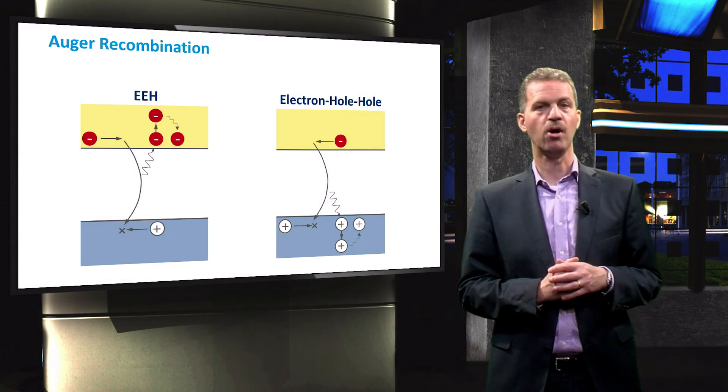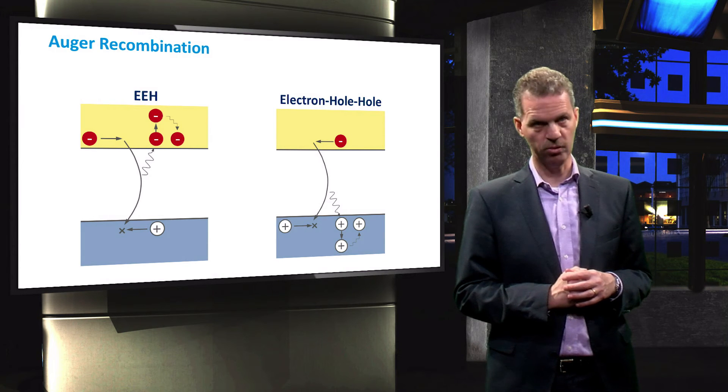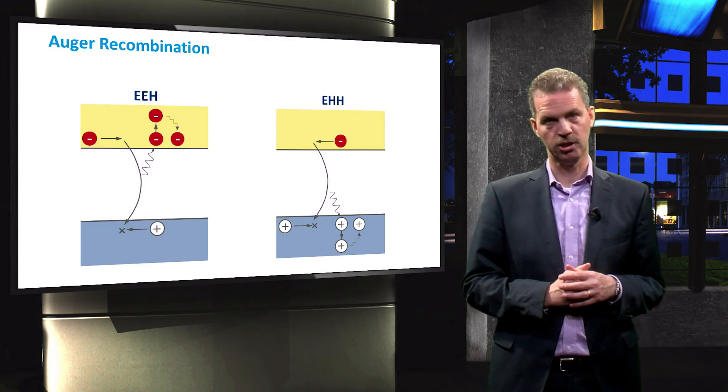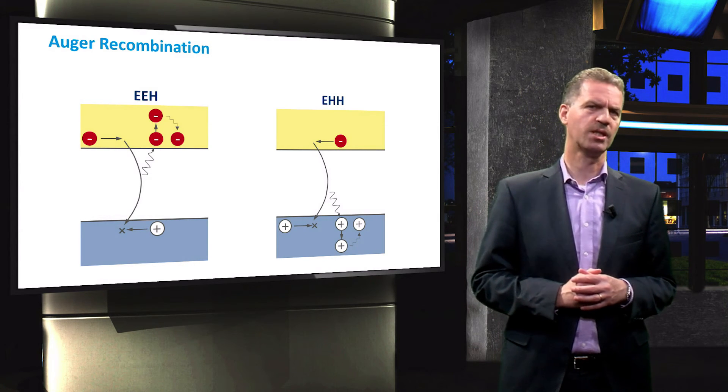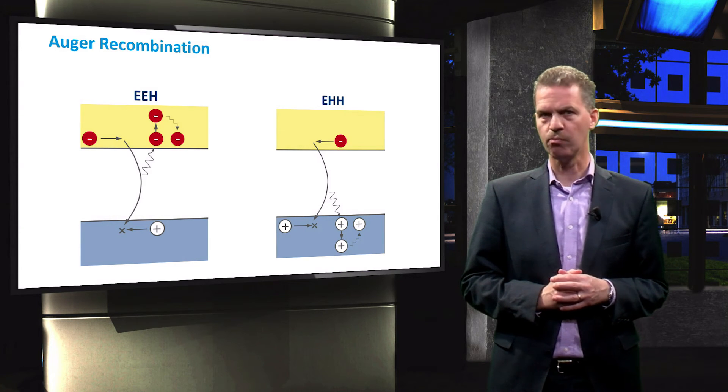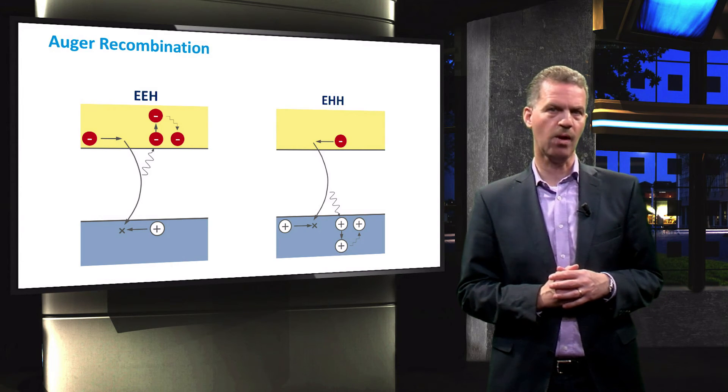If the third particle is a hole, it is an electron-hole-hole process, which will be abbreviated by EHH. Auger recombination strongly depends on the charge carrier densities, since a higher concentration increases the probability that the three carriers can interact in this way.